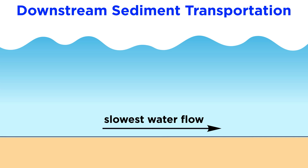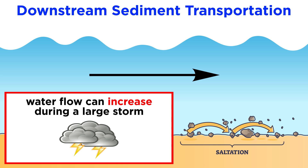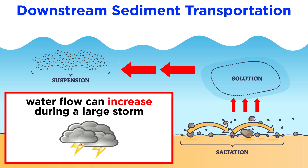In streams, the slowest water flow occurs at the bottom of the bed, due to friction between the stream bed and the gravity-driven water. This allows large sediments like boulders and pebbles to settle and be deposited at the bottom. If the water flow suddenly increases, say during a large storm, the sediment at the bottom, beginning with the finest grained material like fine sand, can bounce off other rocks and saltate, or jump, into the stream's flow and move further downstream.